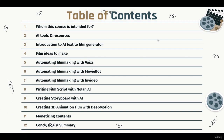Chapter eleven covers monetizing content. I'll teach you how to potentially monetize your film content through several business models like ad revenue from YouTube, membership platforms, subscription models, crowdfunding, licensing and distribution for royalty fees, and even educational licensing.